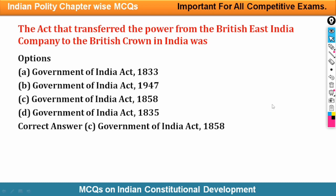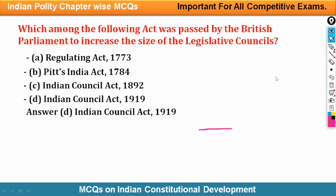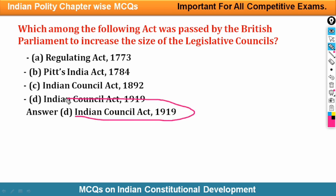Next question: Which act transferred power from the East India Company to the British Crown? The answer is Government of India Act 1858. Which act was passed by the British Parliament to increase the size of legislative councils? The answer is Indian Council Act 1919, after which the size of the legislative council was increased.